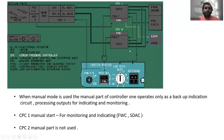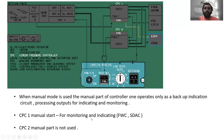When manual mode is used, the signal goes through a discrete signal path. The manual part of controller one operates only as a backup indication circuit, processing outputs for indicating and monitoring via the flight warning computer and SDAC. The CPC2 manual part is not used.